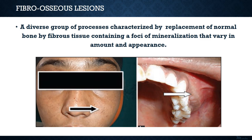To begin with fibro-osseous lesions, it is important to understand the definition of this term. A thorough understanding of the definition will help us understand the pathology better. Fibro-osseous lesions are described as a diverse group of processes characterized by the replacement of normal bone by fibrous tissue containing foci of mineralization that vary in amount and appearance. The basic pathology in all these lesions is that bone is replaced by fibrous tissue, making its physical properties weaker.